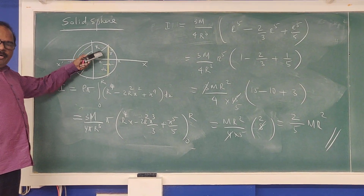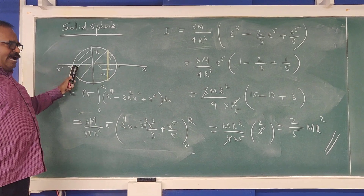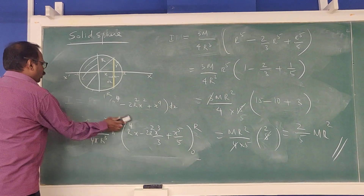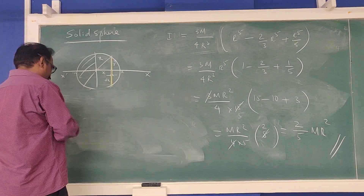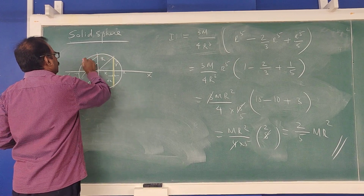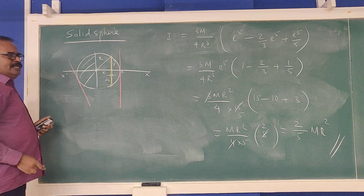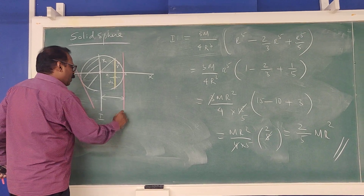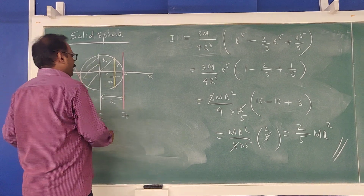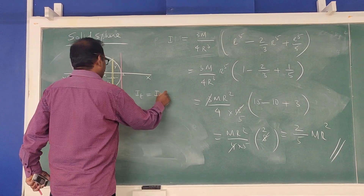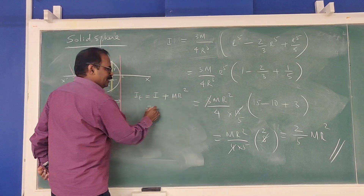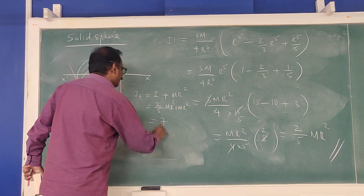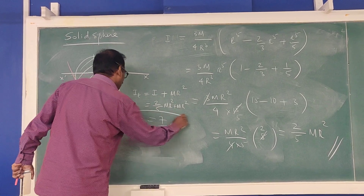The moment of inertia for a solid sphere about any diameter is 2/5 MR². For the moment of inertia about a tangent, we apply the parallel axis theorem. The distance from the center to the tangent is R, so I_tangent = 2/5 MR² + MR² = 7/5 MR².